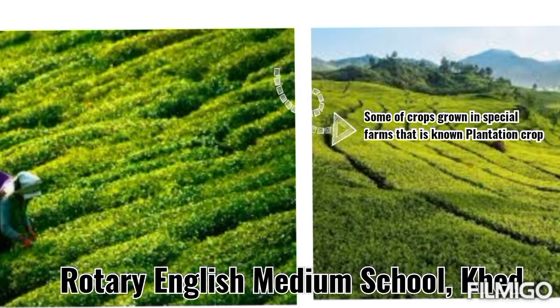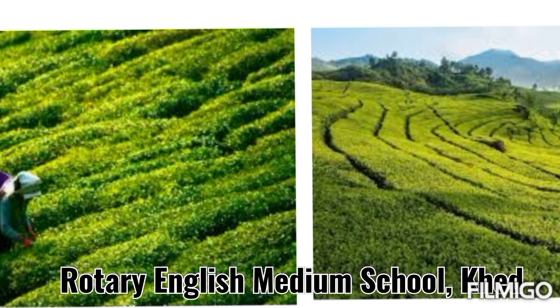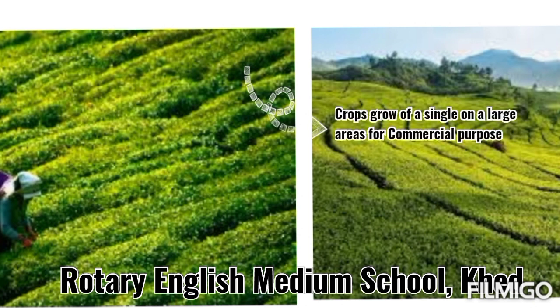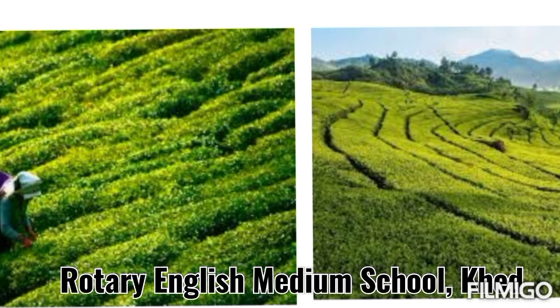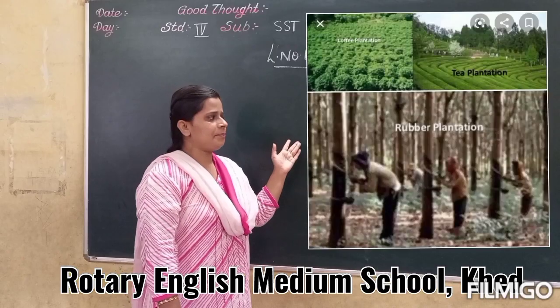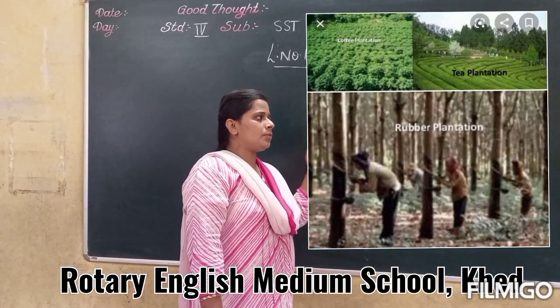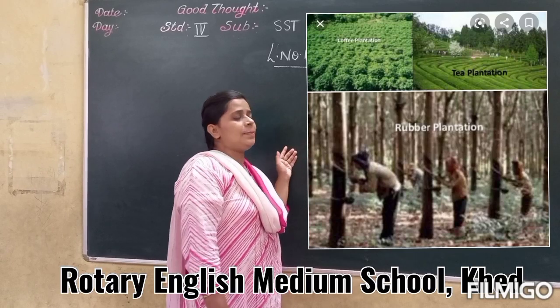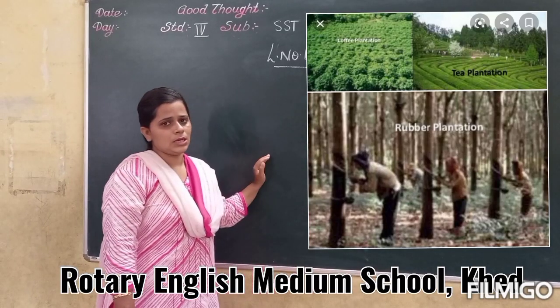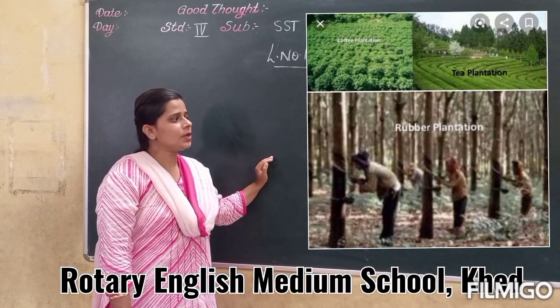They are called plantation crops. Plantation means the growing of a single crop over large areas for commercial purpose. Good examples of plantation crops in India are tea, coffee, and rubber.